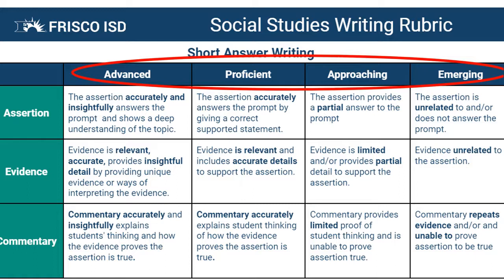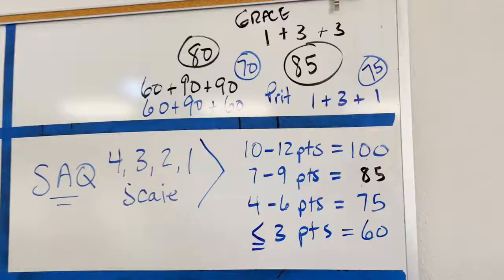The challenge for our team and the thing that we centered our discussions around was, how do I take these holistic categories — advanced, proficient, approaching, and emerging — and convert it into a numerical value or score that can be represented in the grade book?